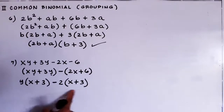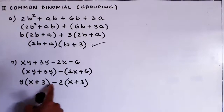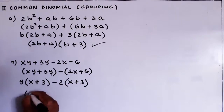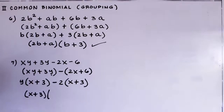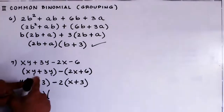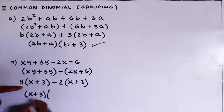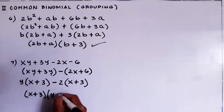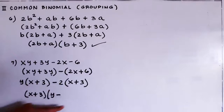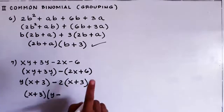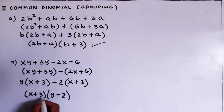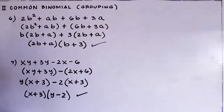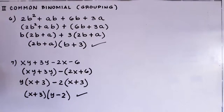Now, the common binomial is x plus 3 — we have x plus 3 in the first group and x plus 3 in the second group. We remove x plus 3: the first group divided by (x plus 3) cancels, leaving y; minus — the second group divided by (x plus 3) cancels, leaving 2. So our final answer is (x plus 3)(y minus 2). This is already simplified, so this is our final answer. Thank you very much class, and see you next time.